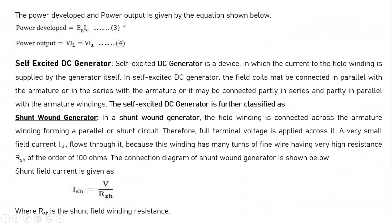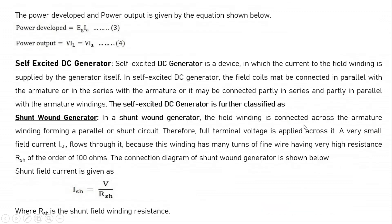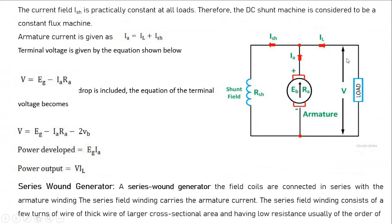Power is always developed in the armature: Power developed = EG × IA. The power output, at the load side, is terminal voltage times load current: Power output = V × IA (since IL and IA are the same here). So power output can be written as V × IA.